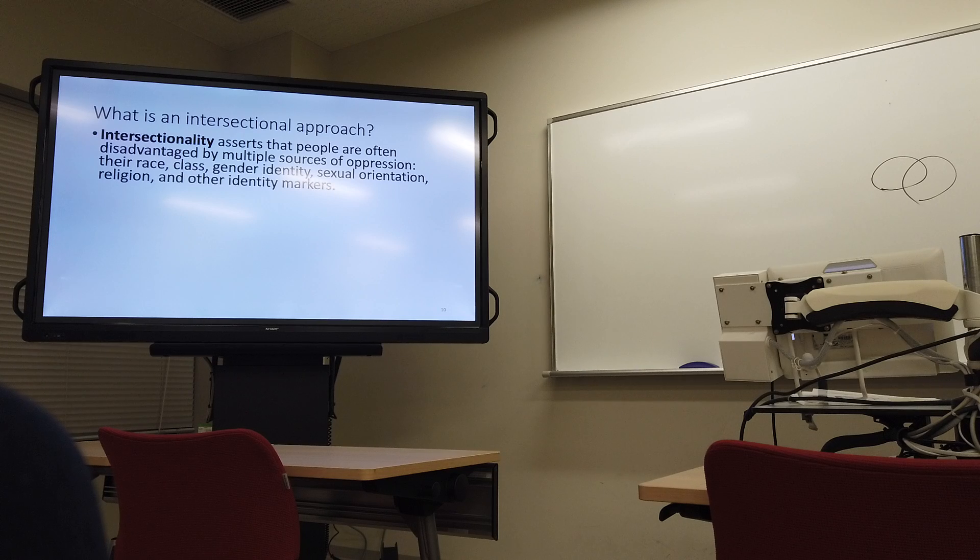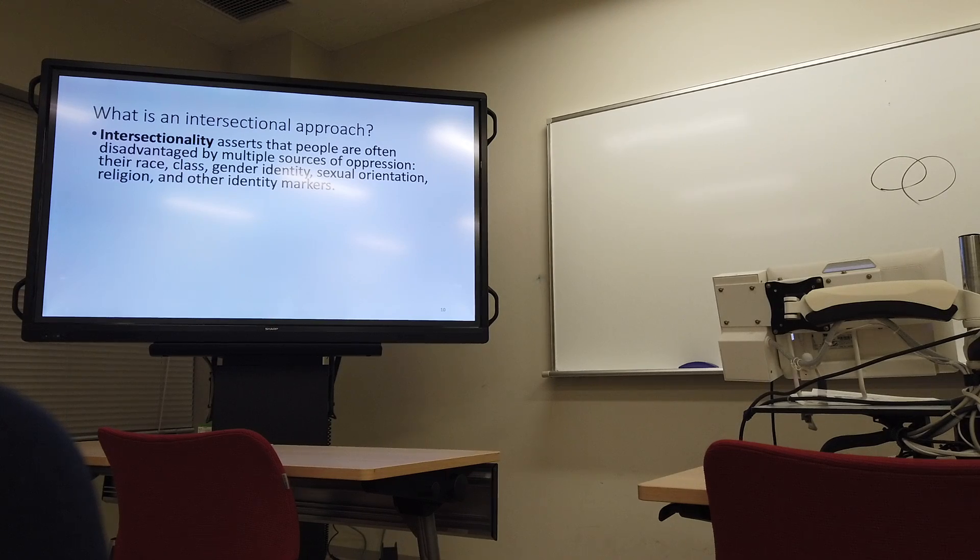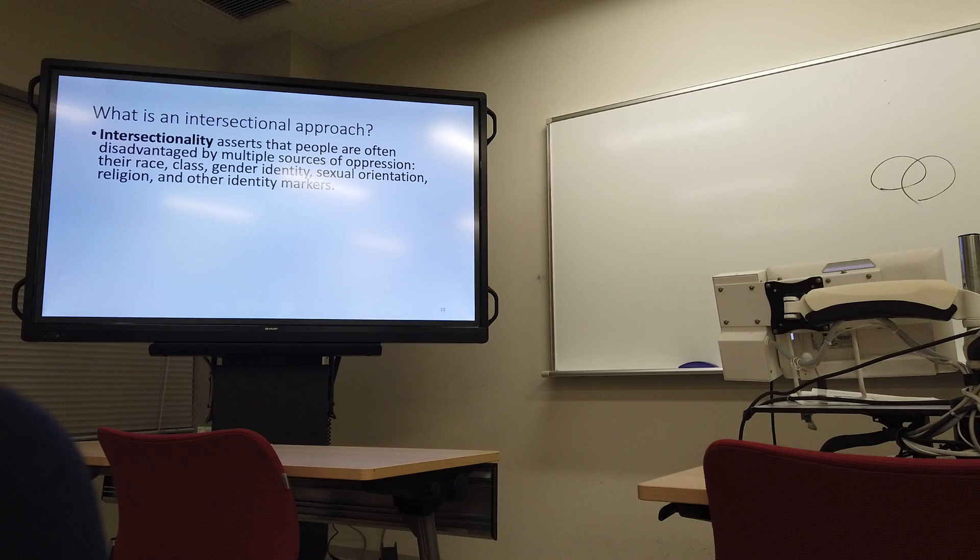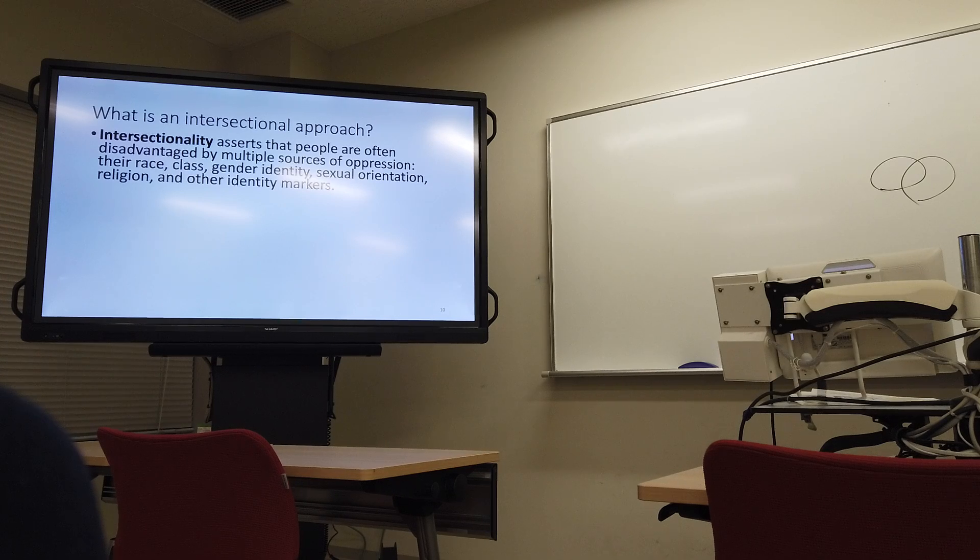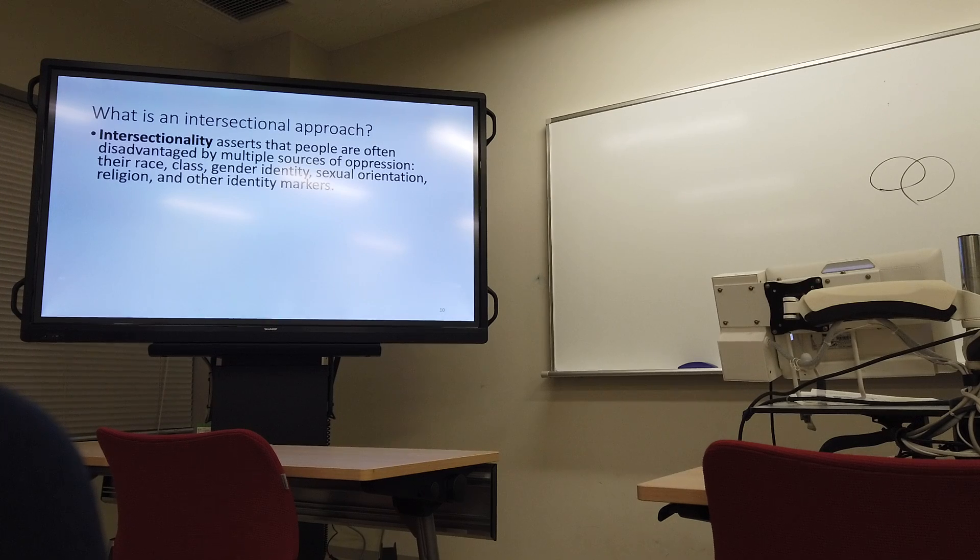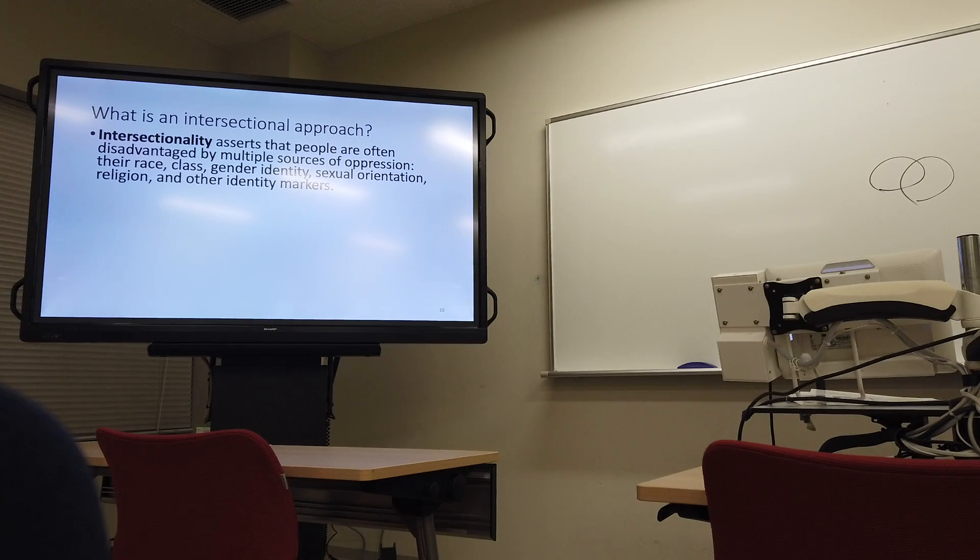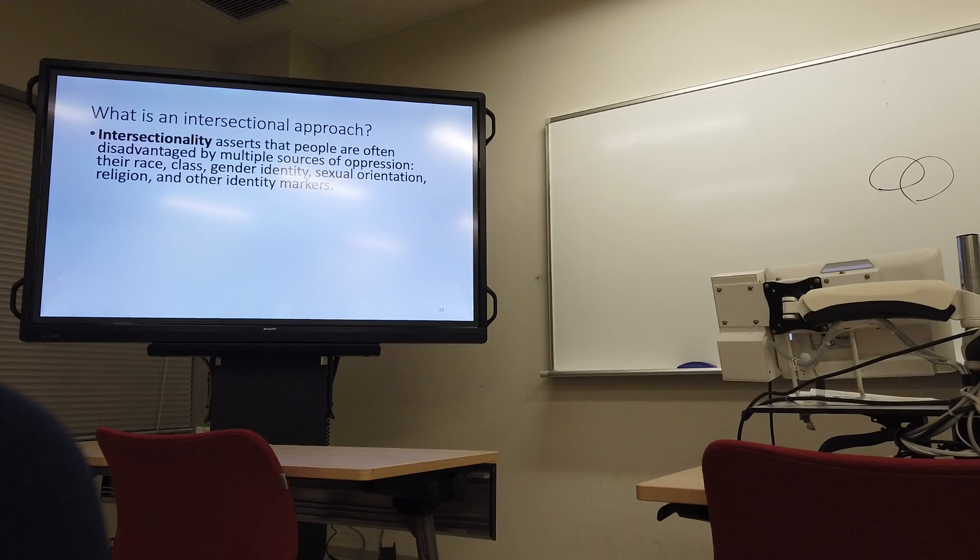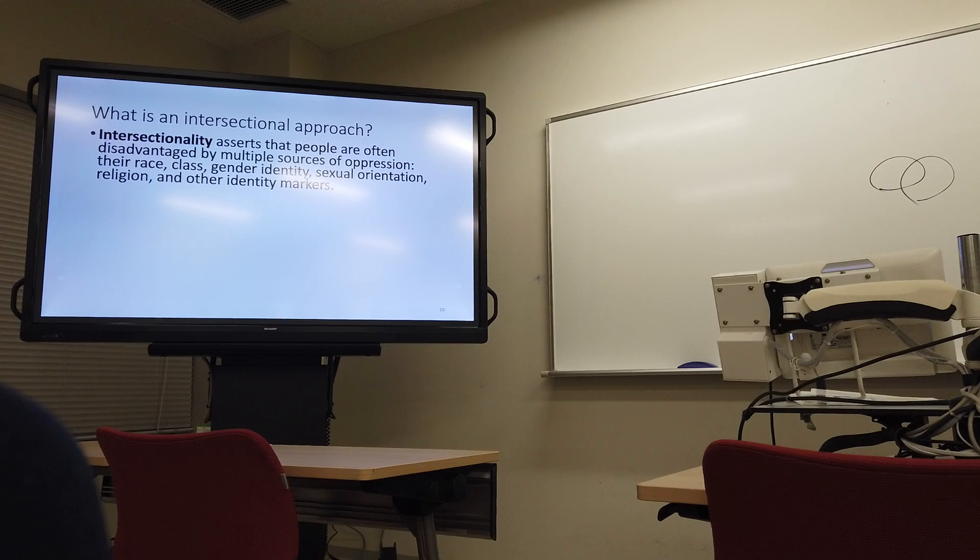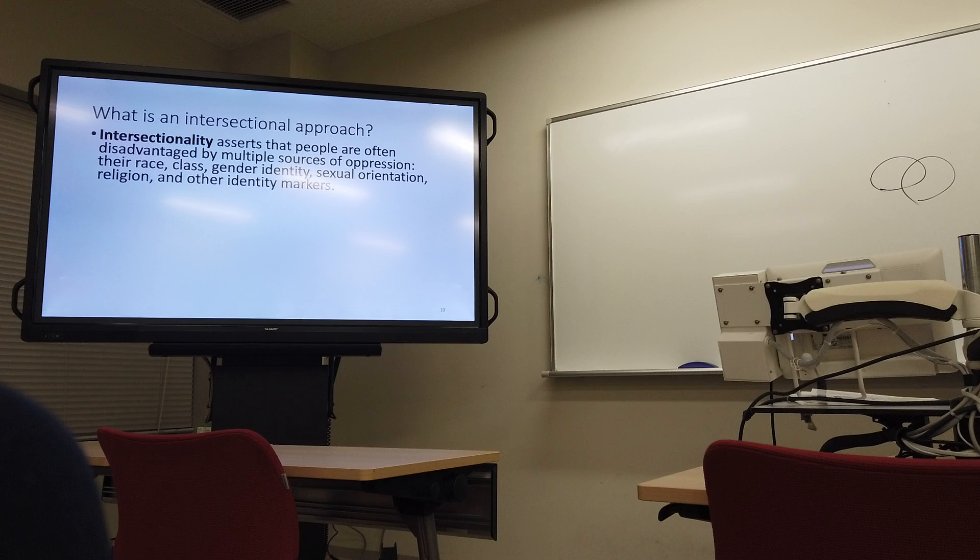So, let's look a little bit more at intersectionality. It asserts that people are often disadvantaged by multiple sources of oppression. Right? So, if you're poor, if you're disabled, if you're a woman, in most places in the world. Right? All of these different things. If you're coming from a country, especially, that are not American, they have a lot of race issues. But also, Canada, there's obviously issues with race. And so there are definitely these kinds of multiple sources of oppression.